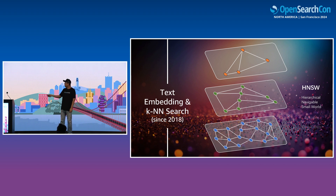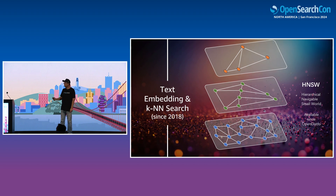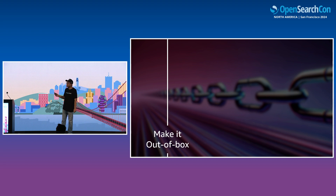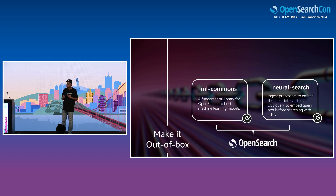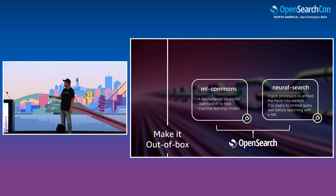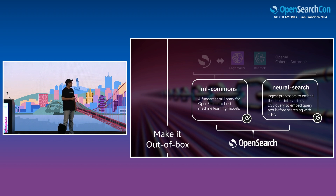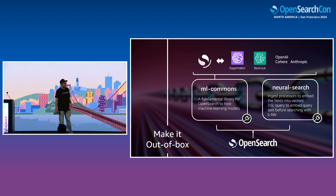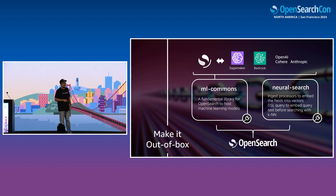Now OpenSearch is trying to make things even more out-of-box. We are not positioning ourselves as a pure vector DB, but as a total solution for semantic search. We have two modules. First is ML Commons, a fundamental tool to let OpenSearch host machine learning models. With connectors, we can connect OpenSearch with models hosted on SageMaker, Bedrock, OpenAI, Cohere, Anthropic — everywhere. If you have an endpoint of a model, you can serve it inside OpenSearch. For Neural Search, it provides two functionalities: an ingest processor to embed fields into vectors, and a DSL query to embed the query text before it's searched by the KNN algorithm.